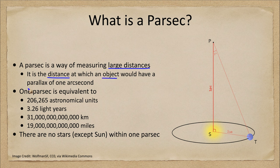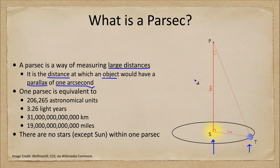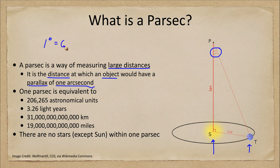The parsec is defined as the distance at which an object would have a parallax of one arc second. Essentially, that is looking at the Sun here, with the Earth orbiting around it, and a star out in the distance — at one parsec, this angle would be one arc second.